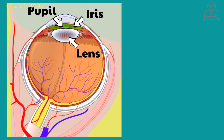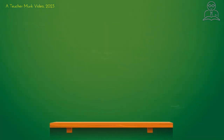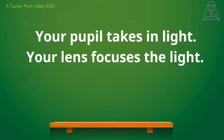Light goes inside the pupil, and right behind the pupil is a part of the eye called the lens. The lens focuses the light that comes into the pupil. Your pupil takes in light — it's a hole in the middle of your iris — and your lens focuses that light. The lens is just behind the pupil, so they work together.